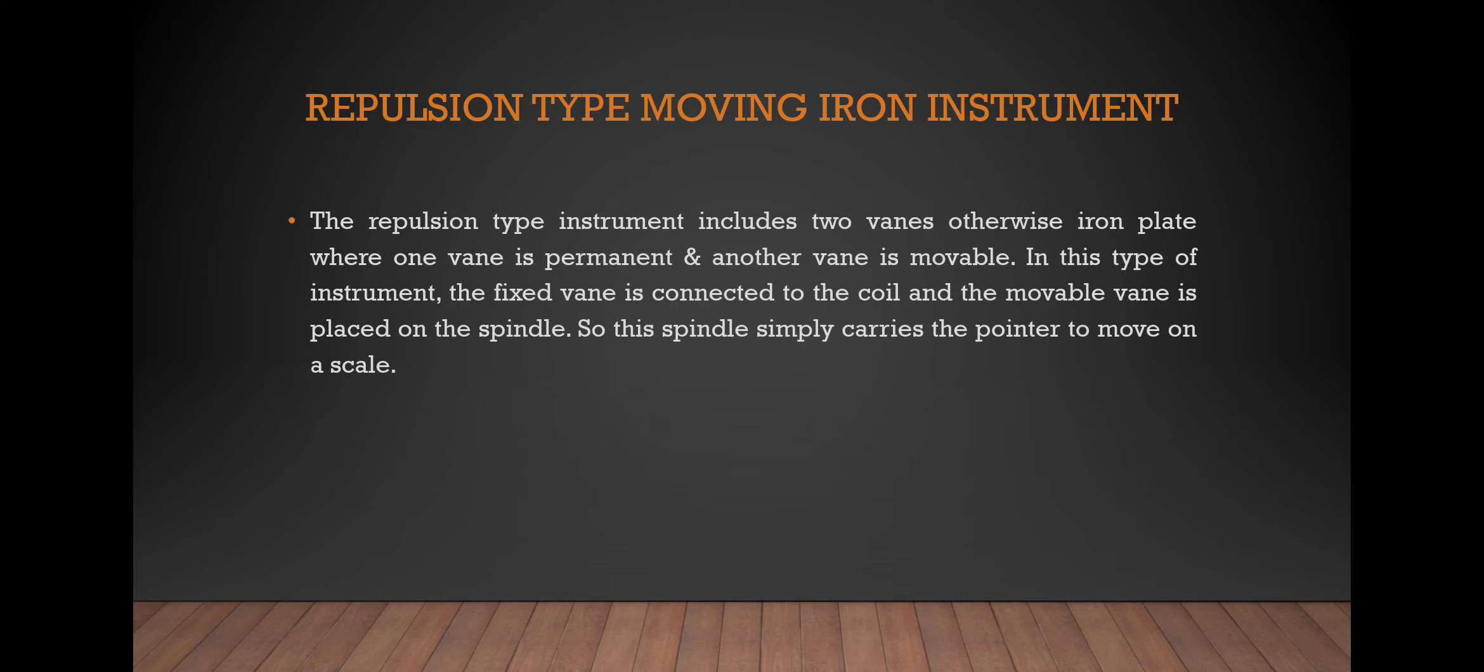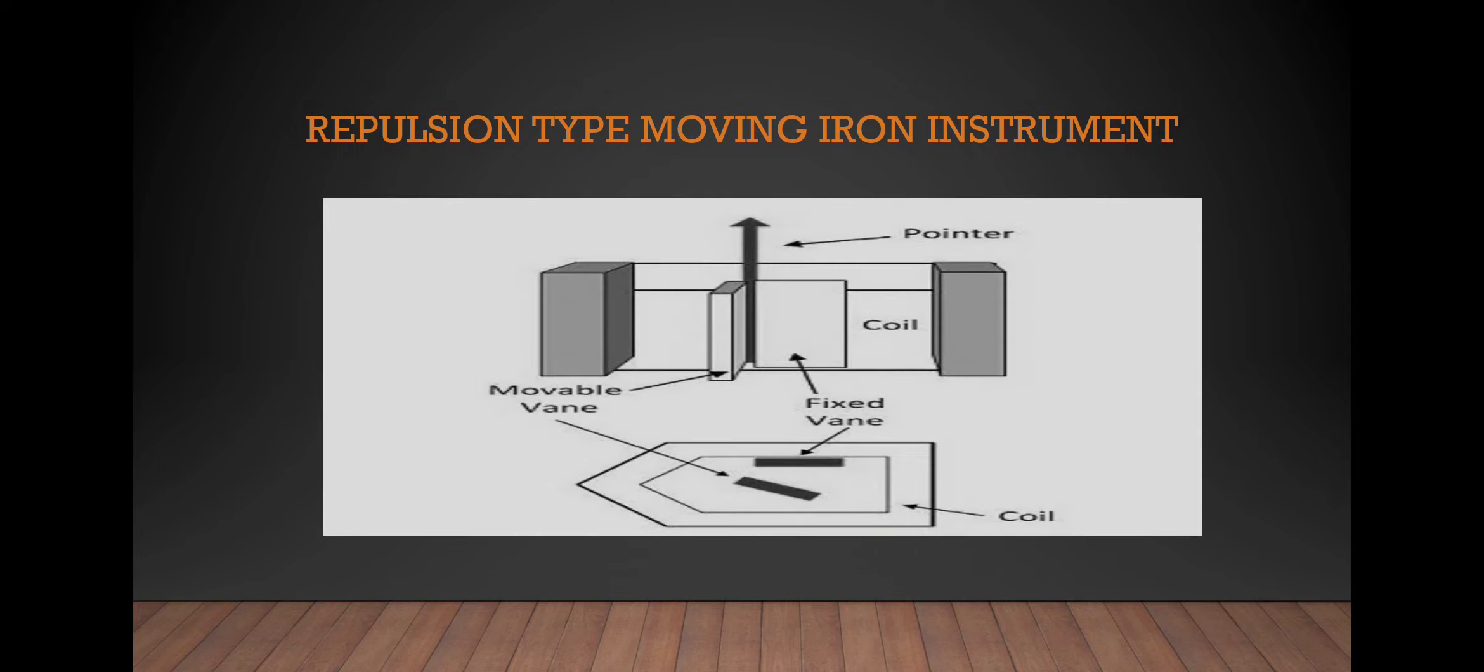Where one vane is permanent and another vane is movable. In this type of instrument, the fixed vane is connected to the coil and the movable vane is placed on the spindle. The spindle carries the pointer to move on a scale.